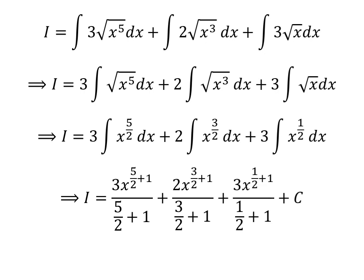The antiderivative of x raised to the power of 5/2 is x raised to the power of 5/2 plus 1, divided by 5/2 plus 1. The antiderivative of x raised to the power of 3/2 is x raised to the power of 3/2 plus 1, divided by 3/2 plus 1. And the antiderivative of x raised to the power of 1/2 is x raised to the power of 1/2 plus 1, divided by 1/2 plus 1.